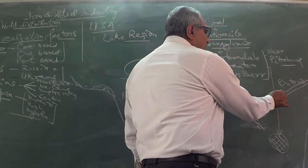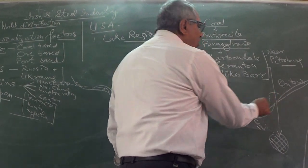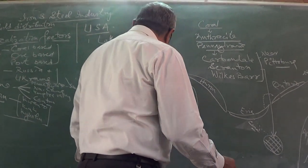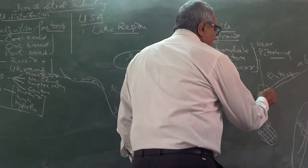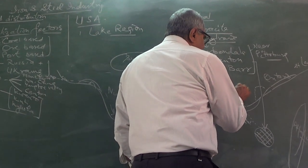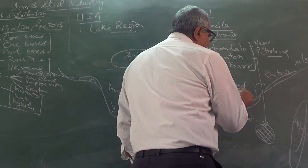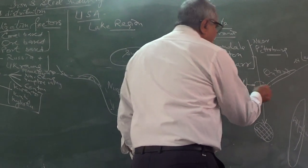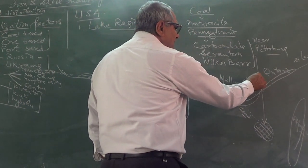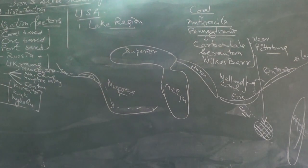To navigate between the lakes, Canada has constructed a canal called the Welland Canal, which works on a lock system. This canal bypasses the Niagara waterfall and is very important for navigational facility in the region.